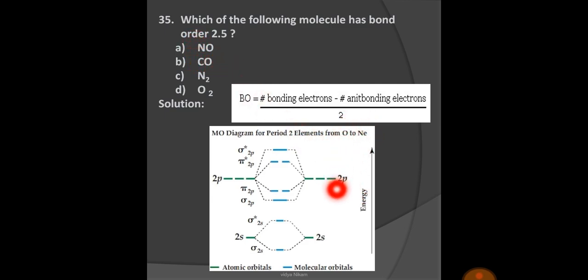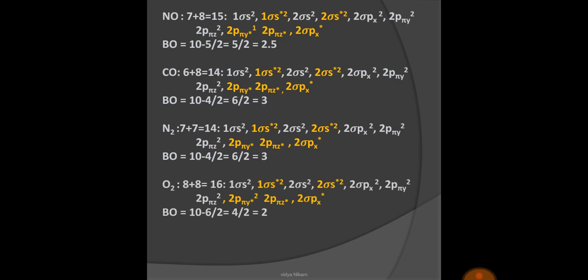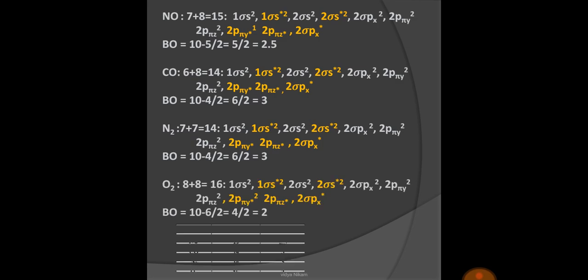If you calculate the bond order, it is found that bond order for NO is 2.5, bond order for CO is 3, bond order for N2 is also 3, and bond order for O2 is 2. So 2.5 bond order is for NO. Option A is the right option.